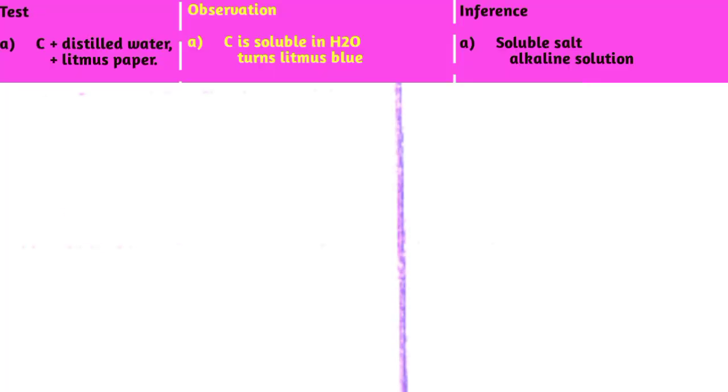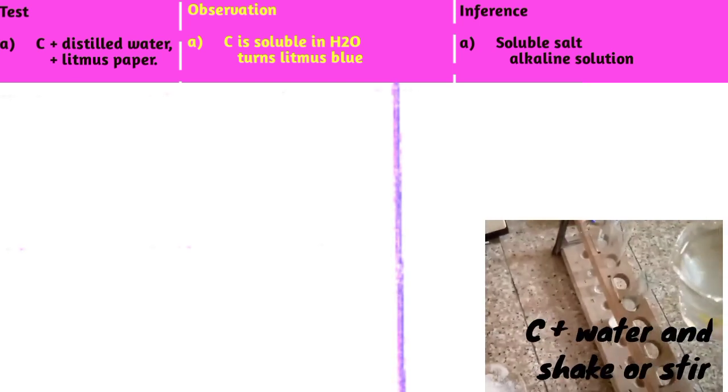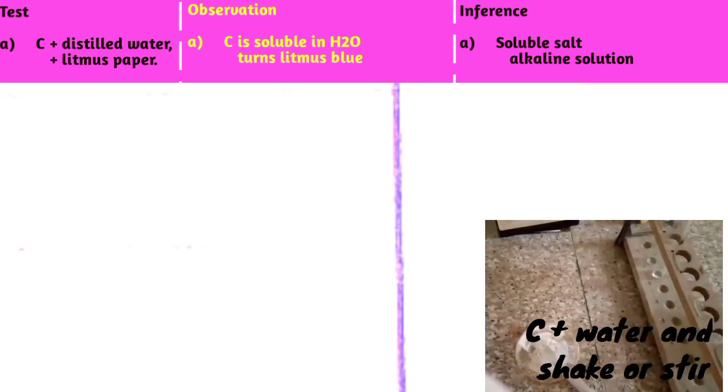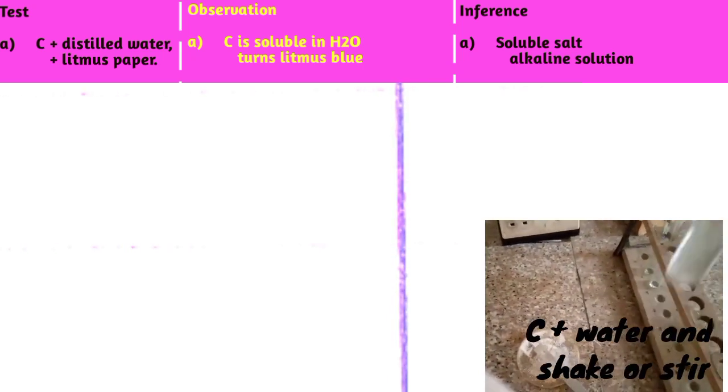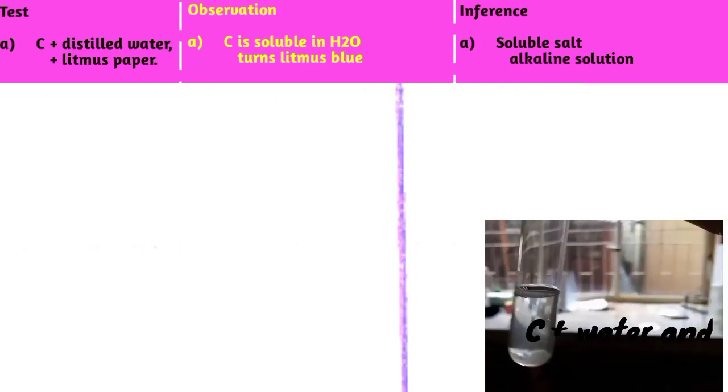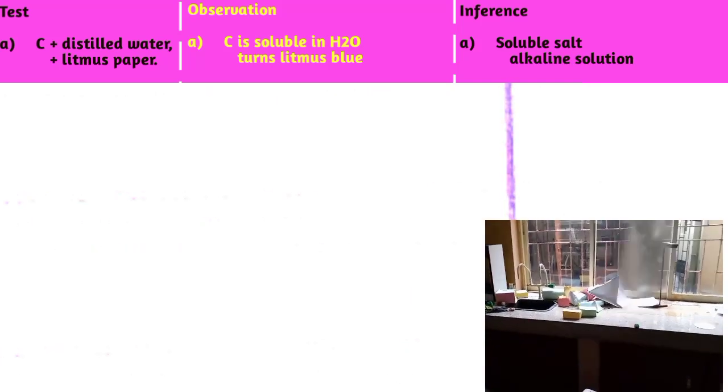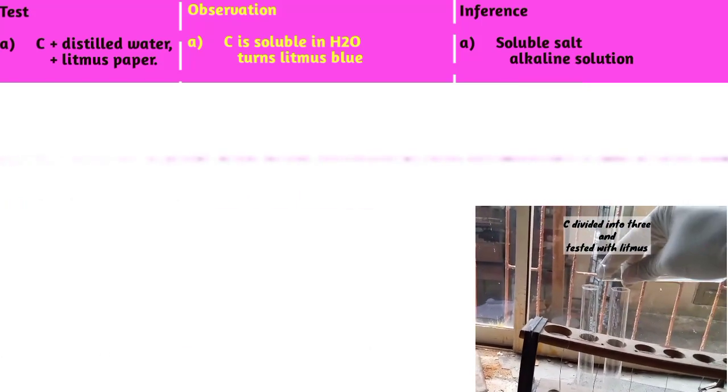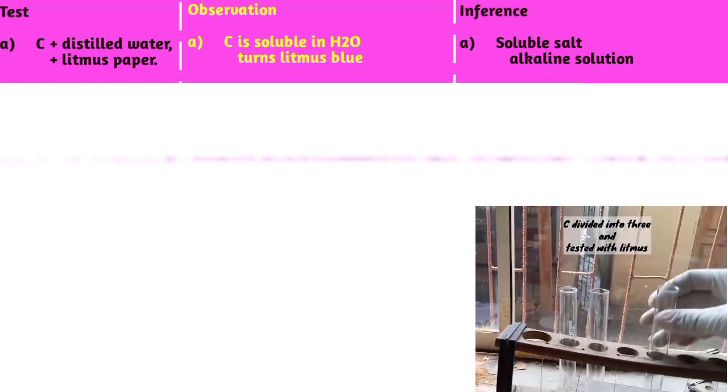So the first question is: Put C into a test tube and add about 10 cm³ of distilled water. The observation is that it dissolves in water. Inference: soluble salt. Remember they ask you to test it with litmus paper.